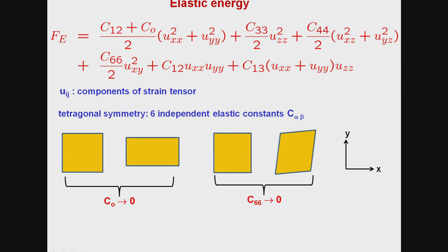Now, if, for example, the elastic constant C₀ goes to 0, then there is a continuous phase transition from a square to a rectangle, thinking in terms of two dimensions. Or, if the C₆₆ component goes to 0, then similarly, there is a continuous transition from a tetragonal phase to a monoclinic phase.